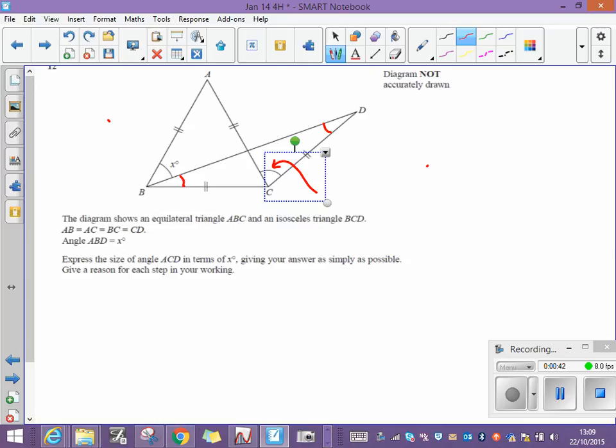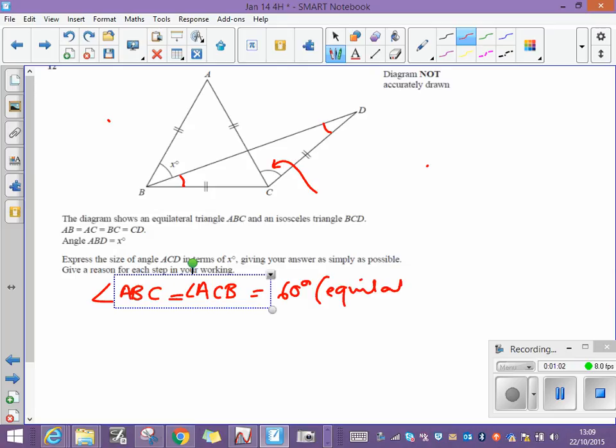First of all, I know that I've got an equilateral triangle. I'm going to start by finding this angle here. Now in order to find this angle, I know that angle ABC in that triangle, and in fact that's the same as angle ACB, they're all exactly the same. So angle ACB is going to be 60 degrees, and the reason for that is that we have an equilateral triangle, and in an equilateral triangle all the angles are the same, so they're all 60 degrees.